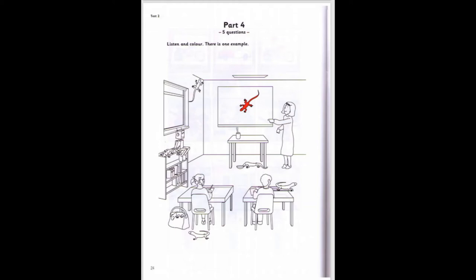Three. Oh, look — there's a lizard behind the girl's chair. Yes, there is. Can you colour it blue? A blue lizard behind the chair. That's right.